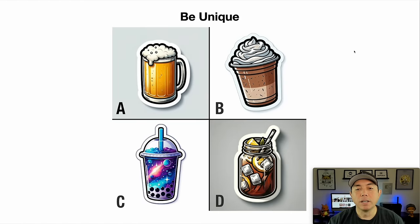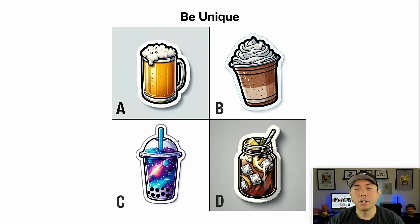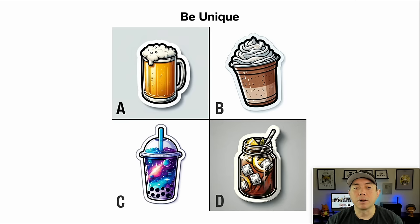Hack number three is to be unique — make something that stands out. I made these drink stickers and the one that stood out the most was the galaxy boba — it's very unique. If I just made it with regular colors it wouldn't stand out. All of these stickers are really cool, but by far the galaxy boba stood out more because it's more unique. Sometimes unique means more details, sometimes it just means very different.